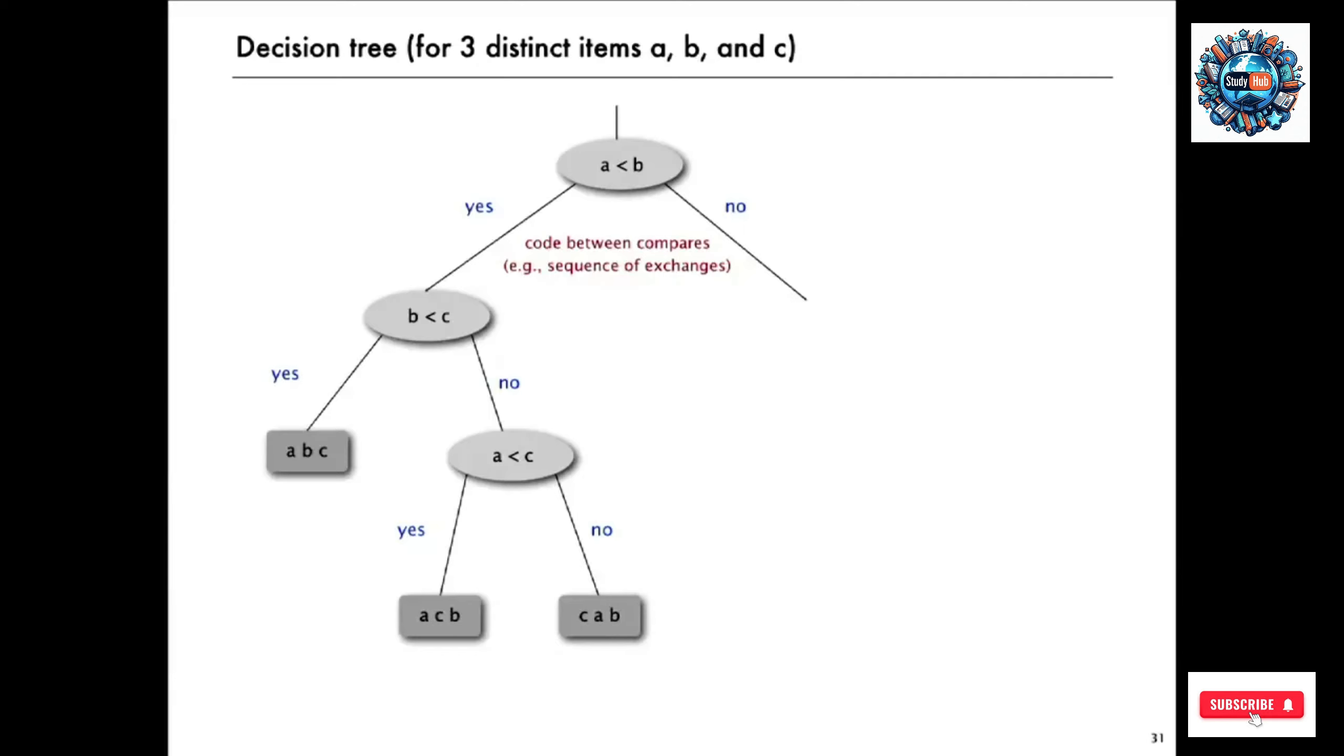And if C is less than A, then it's got to be C, A, B. Those three compares - that C is less than A, C is less than B, and A is less than B - the only possibility is C, A, B.